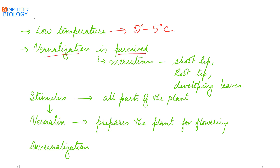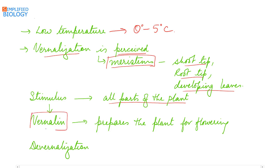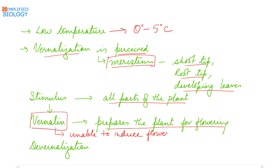Vernalization is perceived by the growing regions — that is, the meristems — such as the shoot tip, root tip, and developing leaves. The stimulus received by the meristems is then transferred to all parts of the plant. It is believed that vernalin, a hypothetical hormone, is formed, which prepares the plant for flowering. Vernalin itself is unable to induce flowering; it only prepares the plant for flowering.